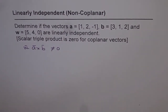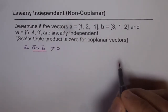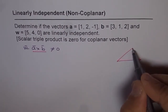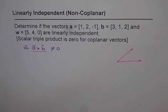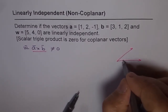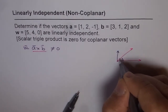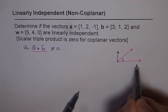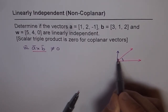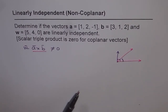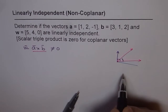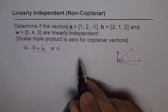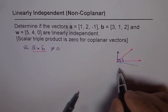Let's understand what it means. First we compute A cross B. If A and B are both vectors in a plane, then A cross B will be a vector pointing out of that page — perpendicular to the plane. Now if vector W is also in that plane, then A cross B is perpendicular to W as well. In that case, the dot product will be 0. So if they are coplanar, then the dot product is 0.